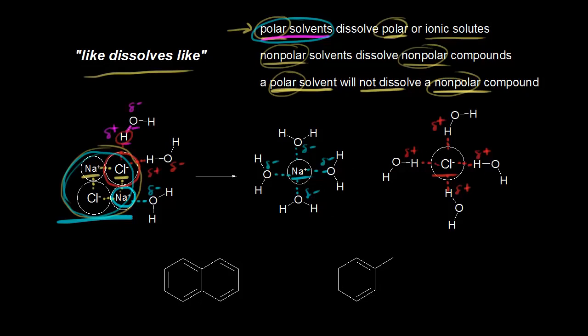By ion-dipole, we have a cation — that's our ion — and our dipole would be water. Water is a polar molecule with a dipole moment. So we have all of these ion-dipole interactions. Ionic solutes that are able to participate in these interactions will dissolve in water.